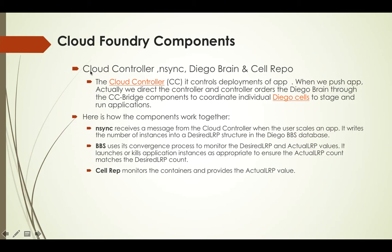The third layer components — Cloud Controller, nSync, Diego Brain, and Cell Repo — are responsible for handling the application lifecycle. The Cloud Controller controls the deployment of apps: when we give the instruction to deploy an app, that command goes to the Cloud Controller, which then orders the Diego Brain using CC Bridge components to stage and run the particular application. So the Cloud Controller is responsible for pushing and running the app on Cloud Foundry. nSync, Diego Brain, and Cell Repo are the supporting components of the Cloud Controller.